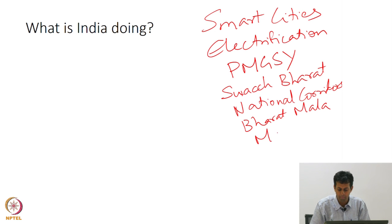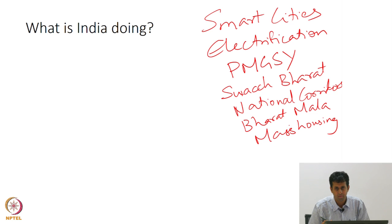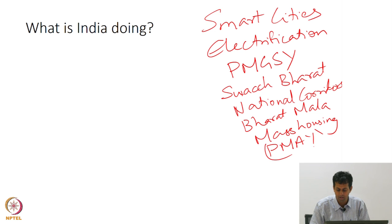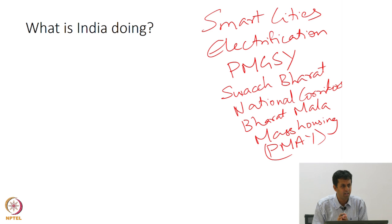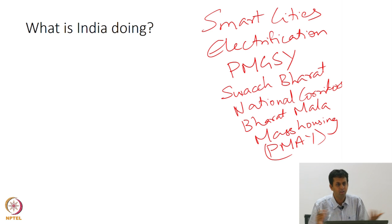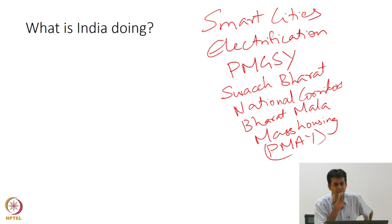Mass housing — so there is the Awaz Yojana, it used to be called the Rajiv Awaz Yojana, now it's called the Pradhan Mantri Awaz Yojana. We are essentially creating a number of schemes. What do these schemes do? Somebody says Pradhan Mantri Awaz Yojana, Pradhan Mantri Gram Sadak Yojana, smart cities — what do these things actually do?